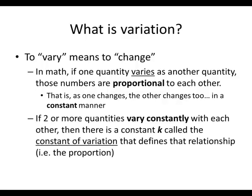And if they do change in a constant manner, we say they vary constantly with each other, and then there is a constant k called the constant of variation that defines that relationship, and we'll see here with an example what that means. And the constant k is a very important aspect to variation, so let's look at an example.